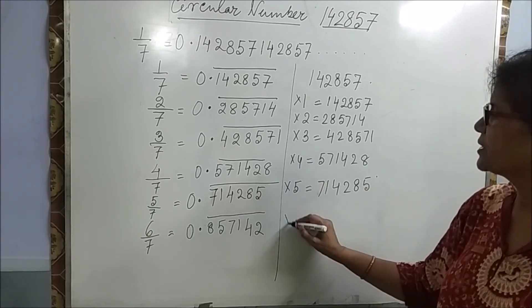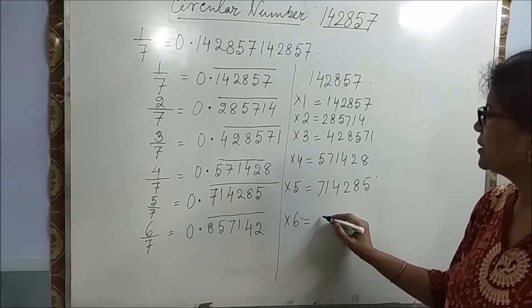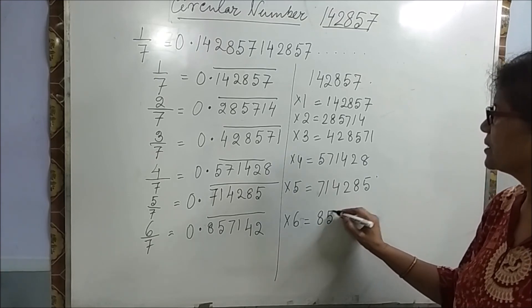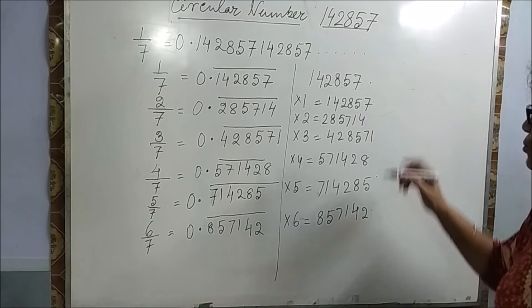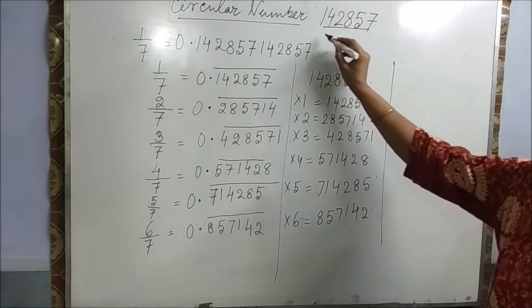And it will multiply by 6. It will be 857142. So, so on. So this is called a circular number.